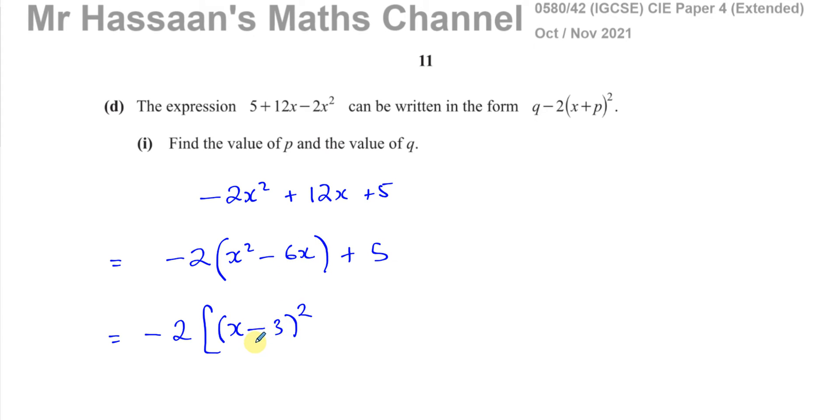Why do we do this? Because when you expand a square bracket, the middle term is always double the number in this position here. So this will be x² - 6x + 9. Now, we don't want a +9. There's no +9 here. So I'm going to take away the 9.